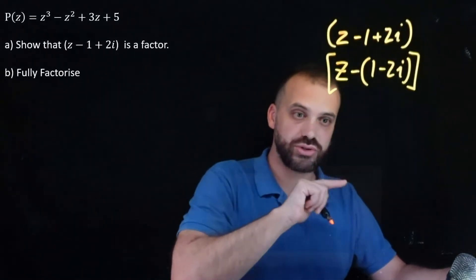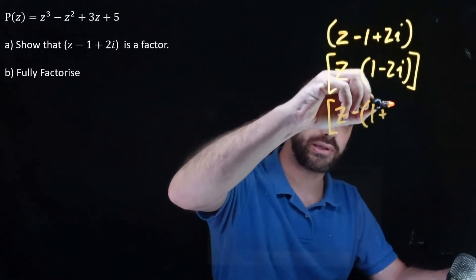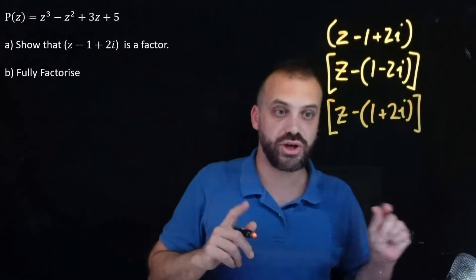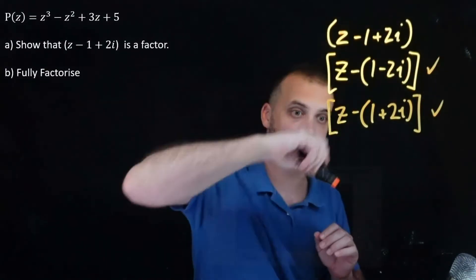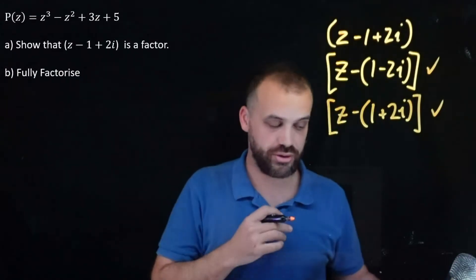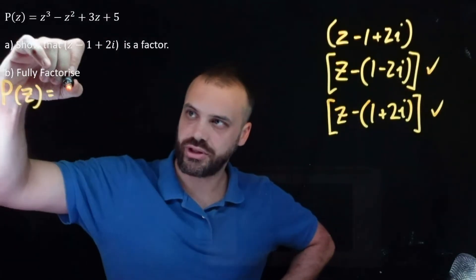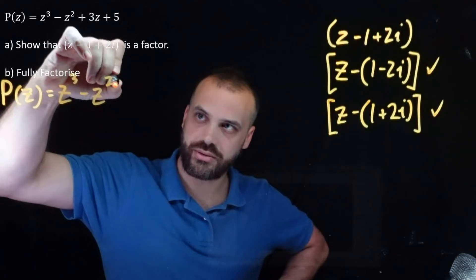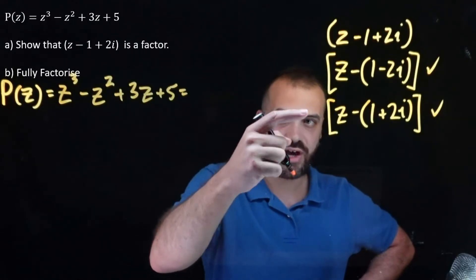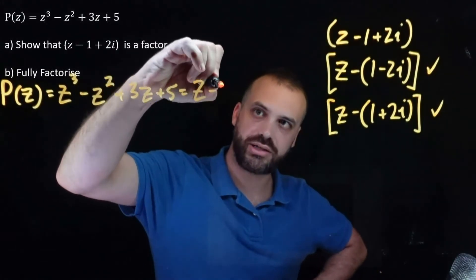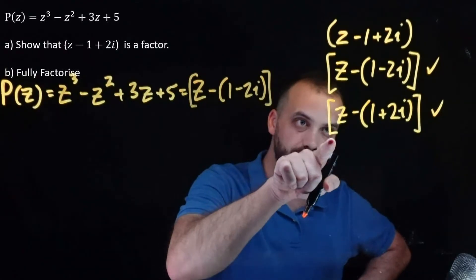So if z minus 1 minus 2i is a factor, that means there is another factor: z minus 1 plus 2i. I know that P(z) has two factors — this one and this one — by the conjugate root theorem. So P(z) equals z cubed minus z squared plus 3z plus 5, but it's also equal to this factor times this factor — but I'm not finished.